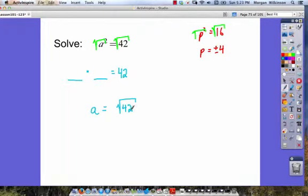We do not want to turn this into a decimal. But it's got to be the positive version or the negative version. So here's our answer: a is equal to plus or minus the square root of 42.